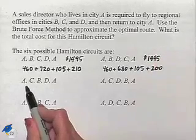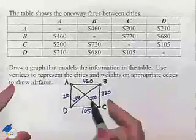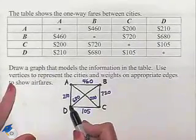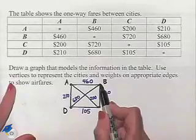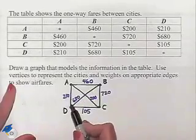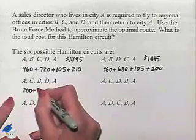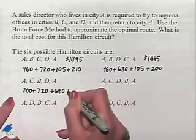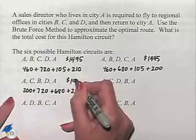Our next circuit is A, C, B, D, A. A to C to B to D to A. That's going to be 200, 720, 680, 210. 200 plus 720 plus 680 plus 210 for a total of $1,810.